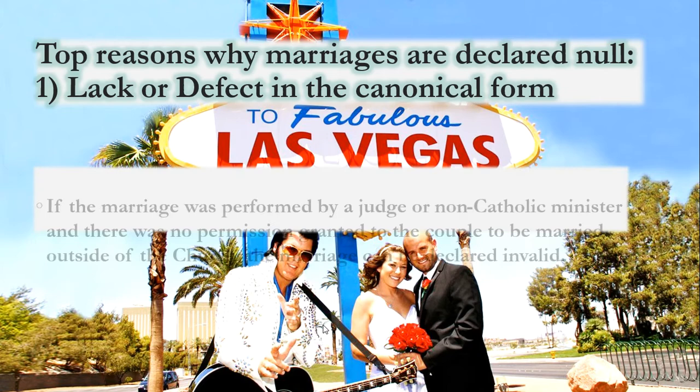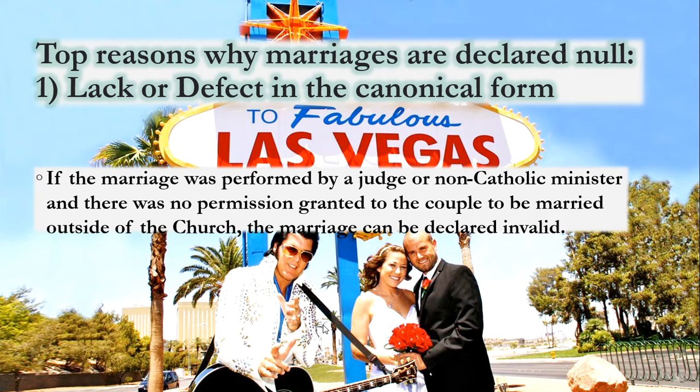To put more words to it: if the marriage was performed by a judge or a non-Catholic minister and there was no permission granted to the couple to be married outside of the church, the marriage can be declared invalid. It can be that simple for the church to declare your marriage null and void. In other words, the church can say God did not bind you together or seal you with graces because you never looked for graces — you went to Elvis instead of a priest.